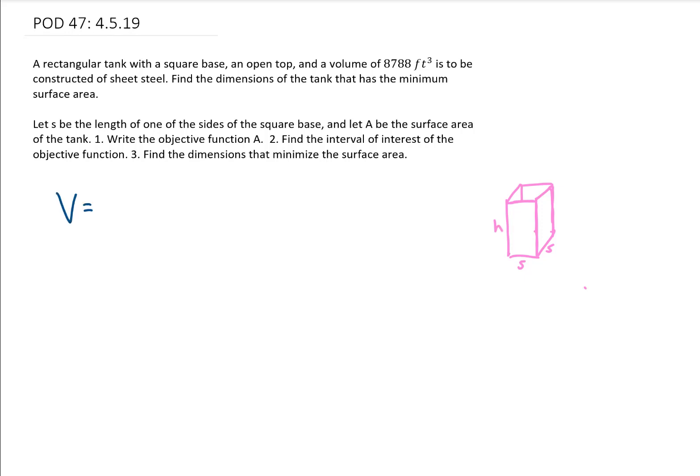The volume of this rectangular tank is going to be S times S times H or S squared H. And given that our volume is 8788 cubic feet, that tells us that our S squared H or our volume is 8788.